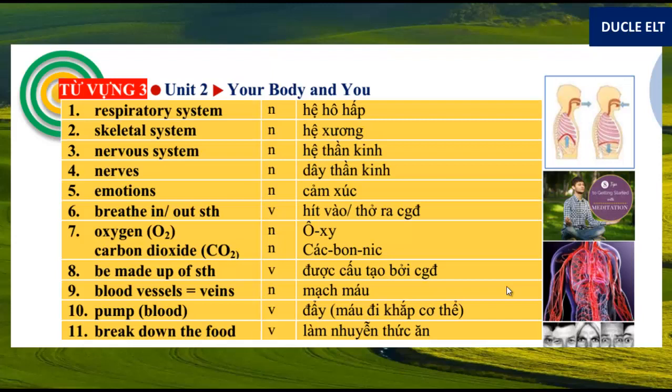The whole section again. 1. Respiratory system. 2. Skeletal system. 3. Nervous system. 4. Nervous system. 5. Emotions. 6. Breathing something. 7. Oxygen. Carbon dioxide. 8. Be made up of something. 9. Blood vessels. 10. Pump blood. 11. Break down the food.